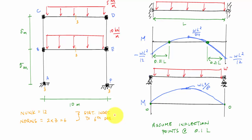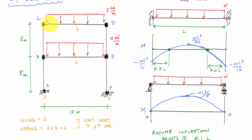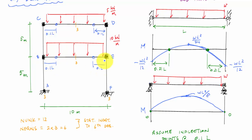I'm going to introduce, to make this approximate analysis happen, hinges at 0.1L and 0.1L on member CD — that's two assumptions — and also hinges at 0.1L and 0.1L on member BE — that's four assumptions. I need two more, so my two other assumptions are that the normal force in member CD is zero and the normal force in member BE is zero. Now I'm ready to analyze this structure.